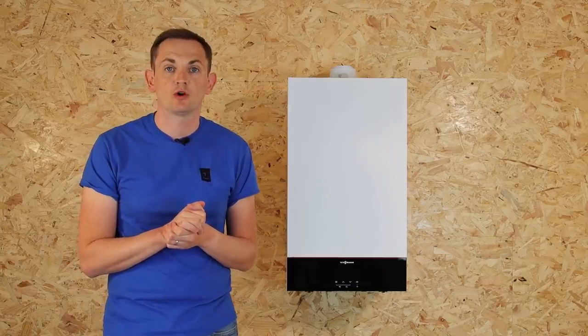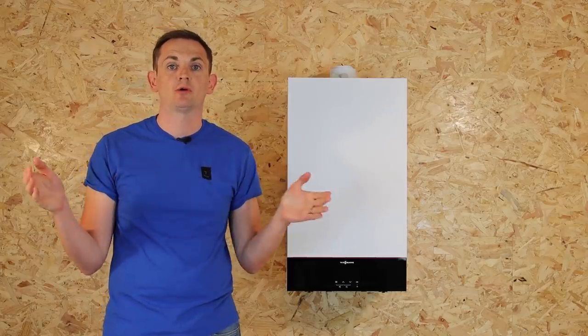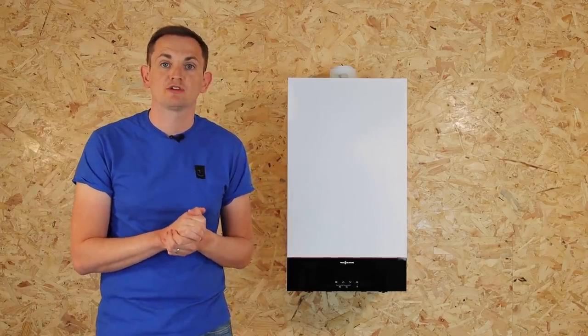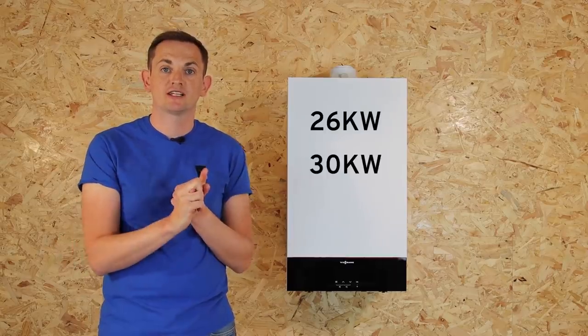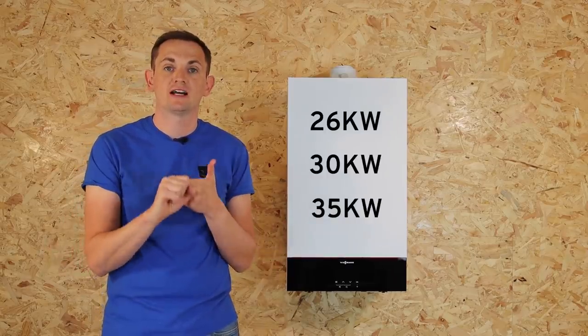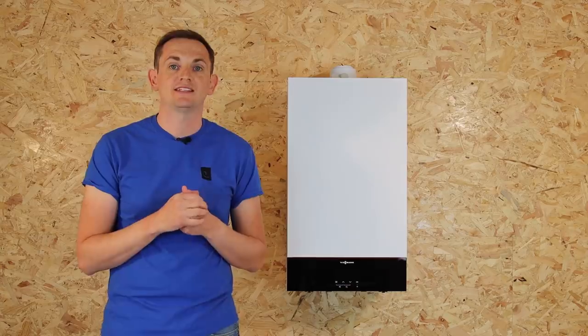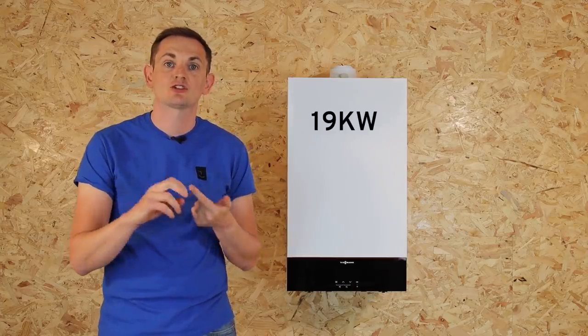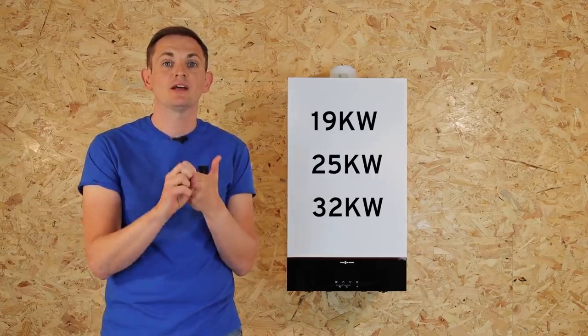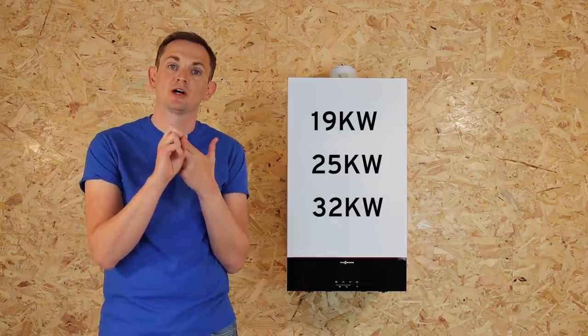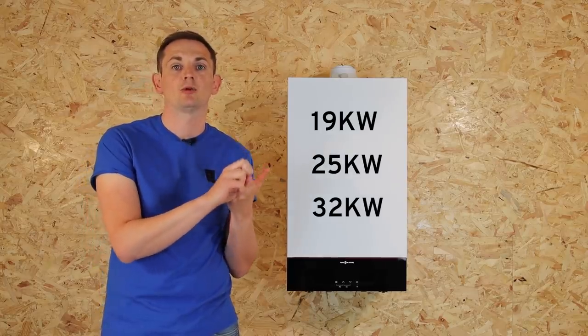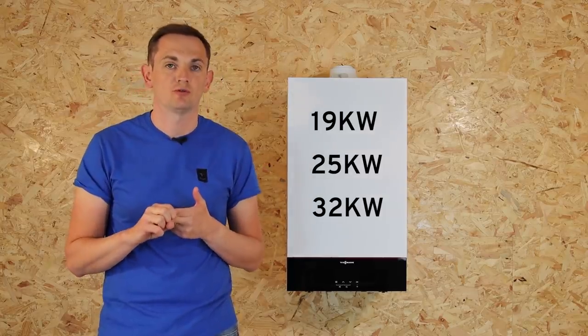Like the previous range of 100 combi boilers, the power outputs available remain the same. So we've got a 26 model, a 30 kilowatt model and a 35 kilowatt model. You might see these advertised differently as 19, 25 and 32 and this is because sometimes Viessmann are quoting the central heating output, not the hot water output of the product.